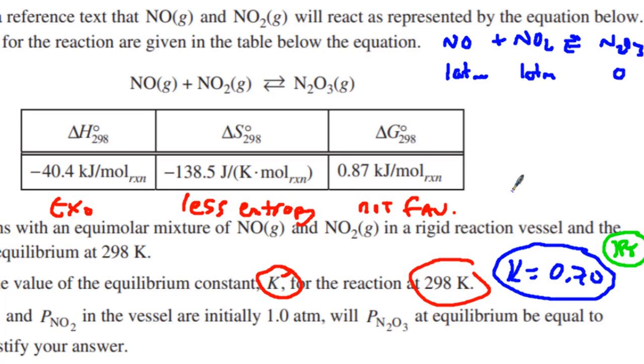Now look at the K. The K is less than 1, which means if it was greater than 1, the products would be favored. So I know the reactants are going to be favored here. We can also take a look at the delta G. It's not a favorable reaction, so it's not going to push forward to the products.